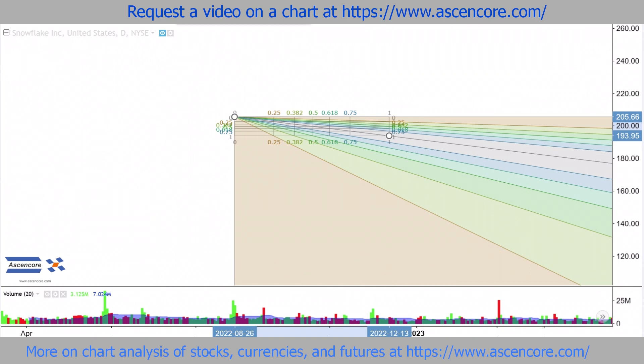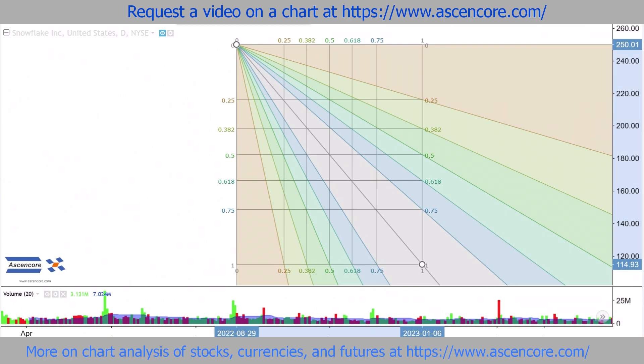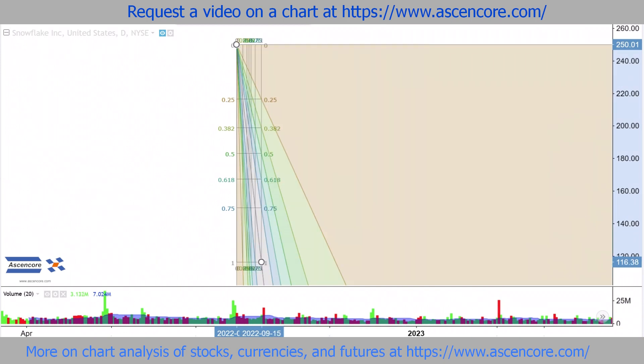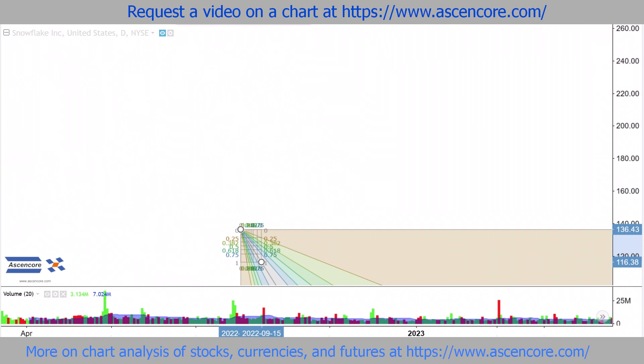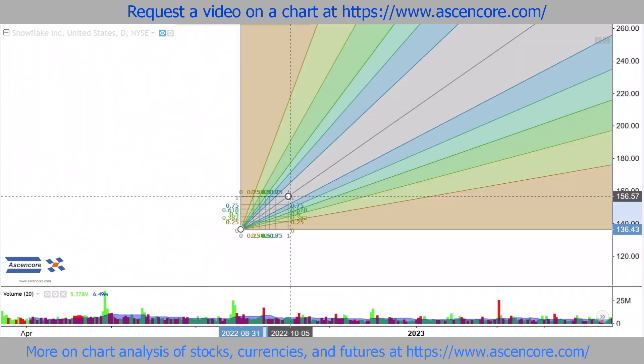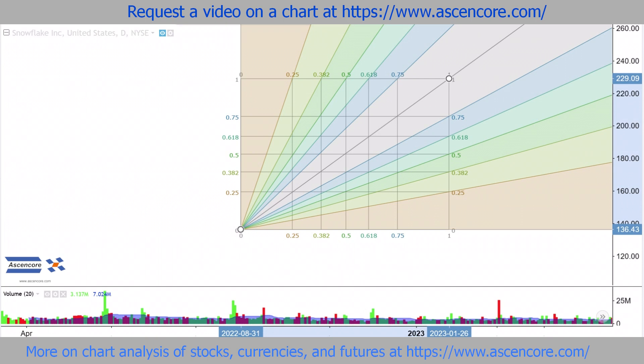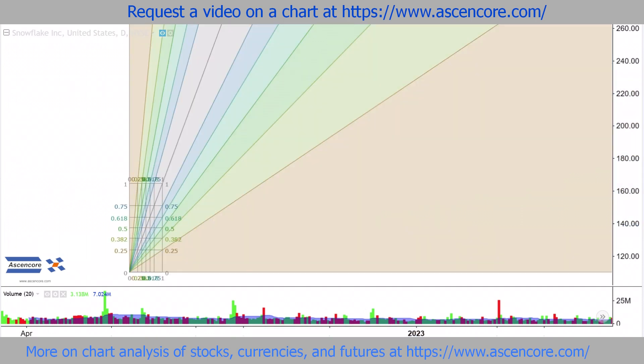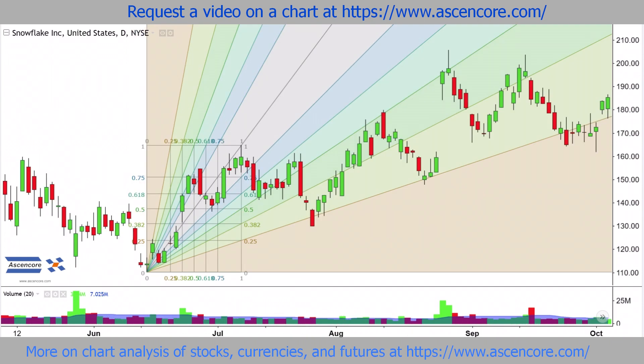As you would expect, compressing and expanding the fan in various ways can affect how the lines are proportioned, which could be important considerations when plotting the start and end points, which will also be applicable for a Fibonacci fan based on an uptrend, which will begin from the bottom left and extend to the top right corner.